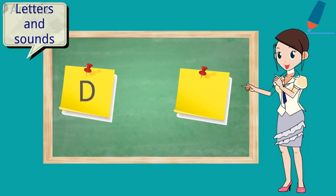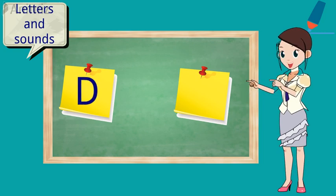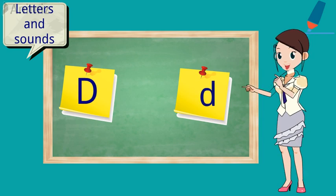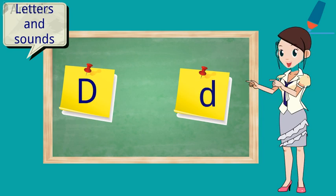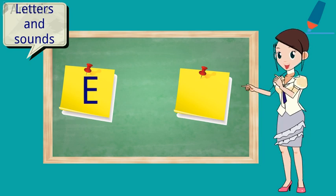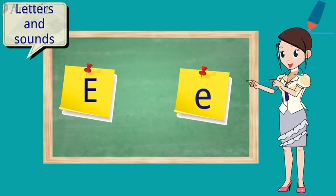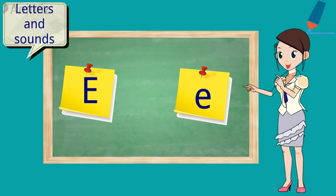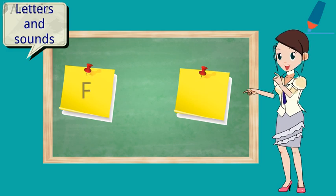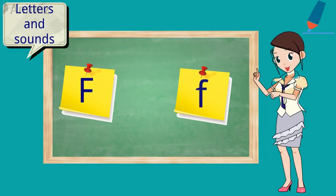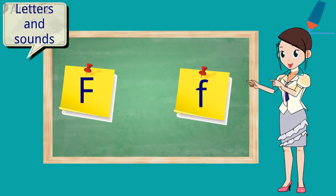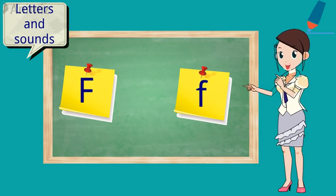The D says D. Every letter makes a sound. The D says D. The E says A. Every letter makes a sound. The E says A. The F says F. The F says F. Every letter makes a sound. The F says F.